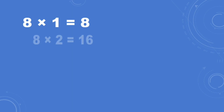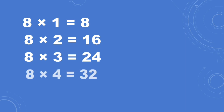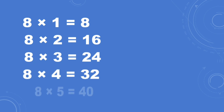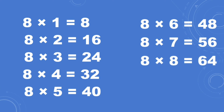Eight ones are eight, eight twos are sixteen, eight threes are twenty-four, eight fours are thirty-two, eight fives are forty, eight sixes are forty-eight, eight sevens are fifty-six, eight eights are sixty-four.